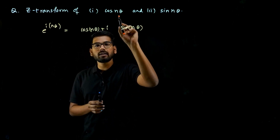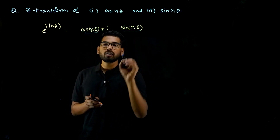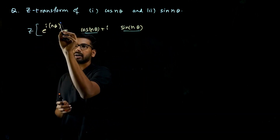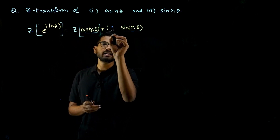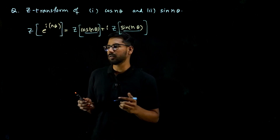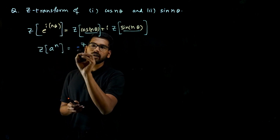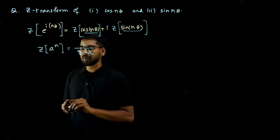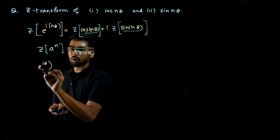The functions we need to find the transform of are cos(nθ) and sin(nθ), which appear here. So if I take the Z-transform of both sides: Z{e^(inθ)} equals Z{cos(nθ)} plus i times Z{sin(nθ)}. I do this because I know the Z-transform of a^n. Z{a^n} equals z over (z minus a).